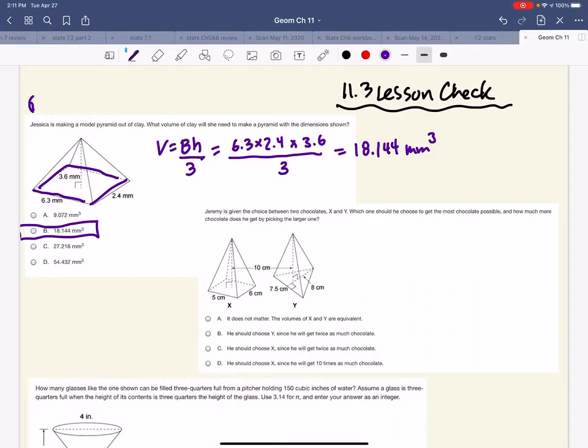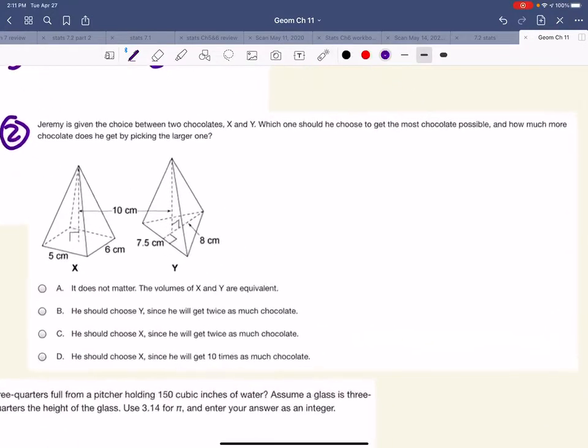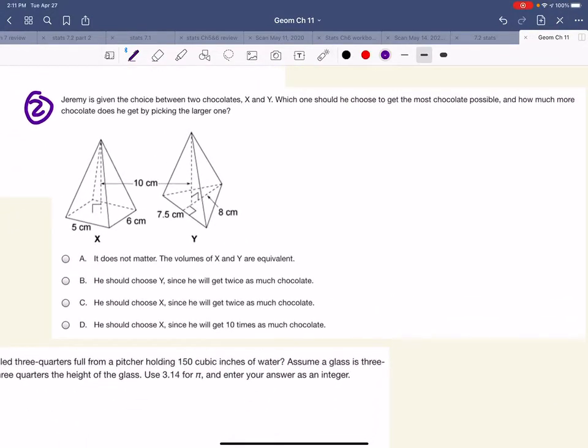The second question says, Jeremy's given the choice between these two chocolates. Which one should you pick because he wants the larger one? So this first one, figure x, the volume of anything in the universe is the area of the base times the height, divide by 3 because it's the same shape stacking up to a point. So the base, 5 by 6, times the height, 10, divide by 3.